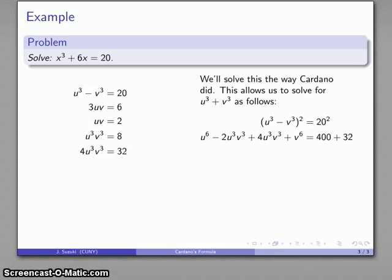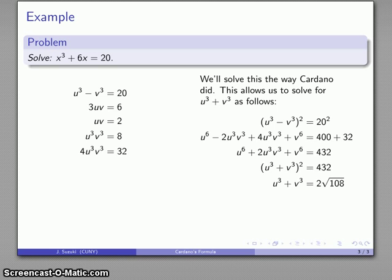If I add 4u³v³, then the left-hand side simplifies as a new expression, which you should recognize as the square of the sum of u³ and v³. And that tells me that u³ + v³ itself is going to be the square root of 432, or simplifying it to 2√108. And so what I have now, I have the difference of two things, I have the sum of two things, and that means I can find the two things individually very easily. I'll go ahead and write down that second equation there.